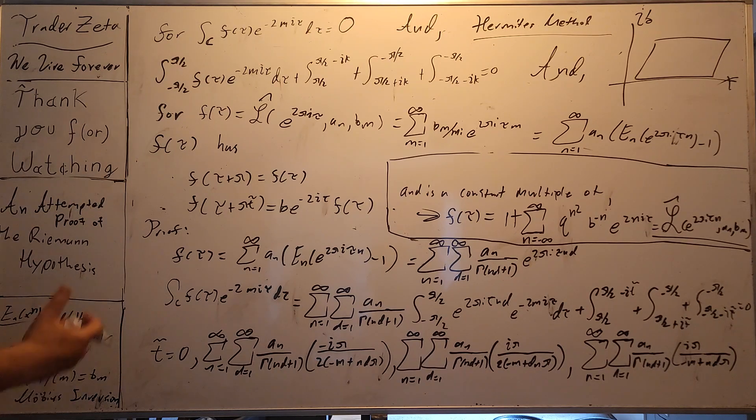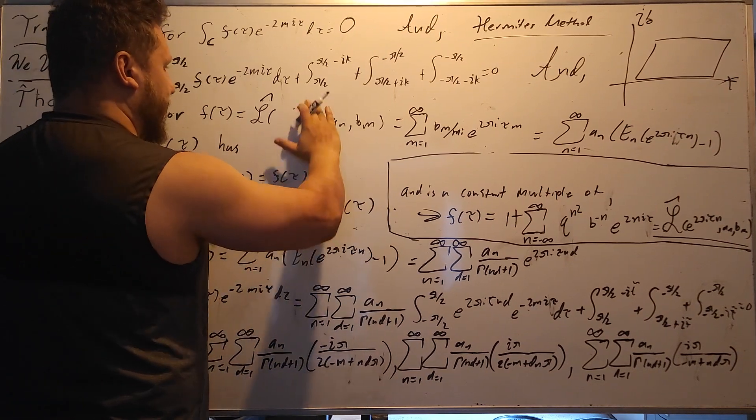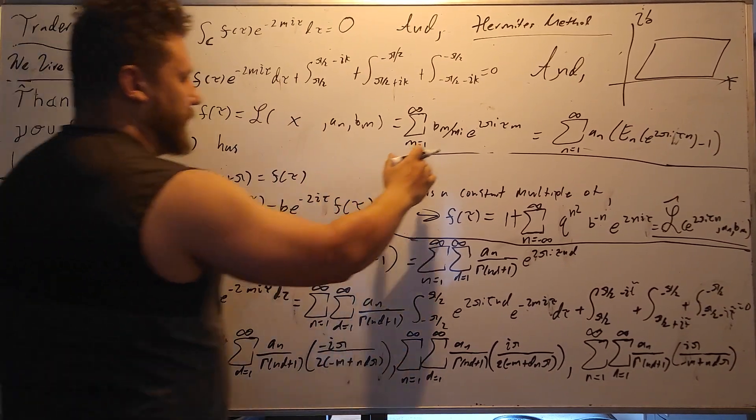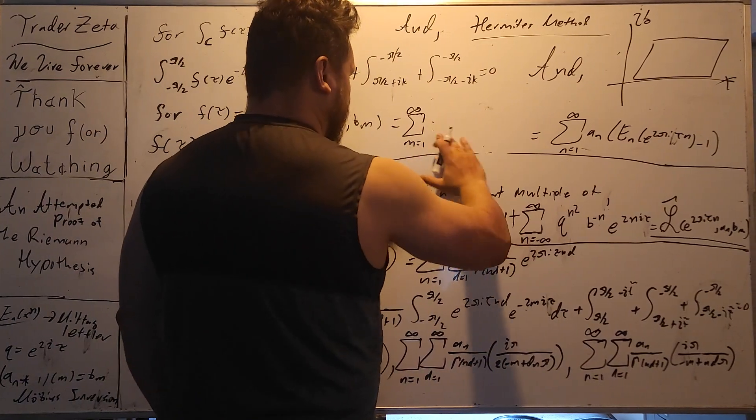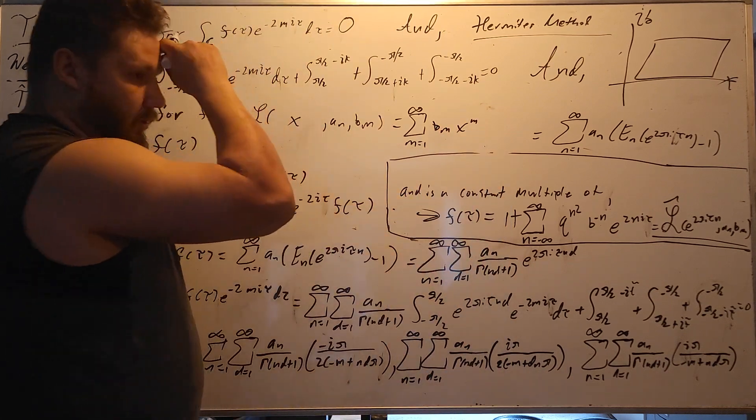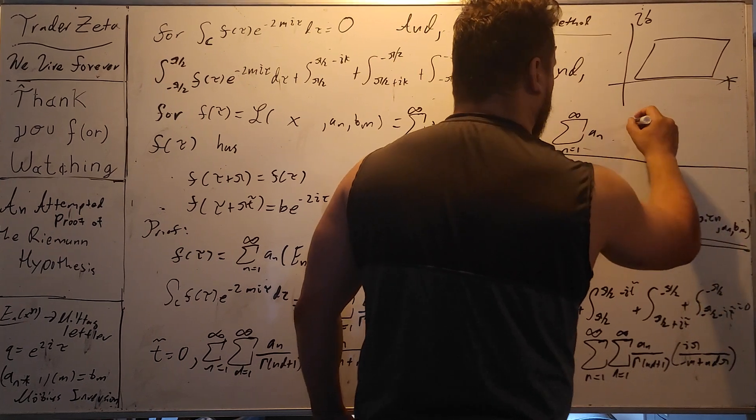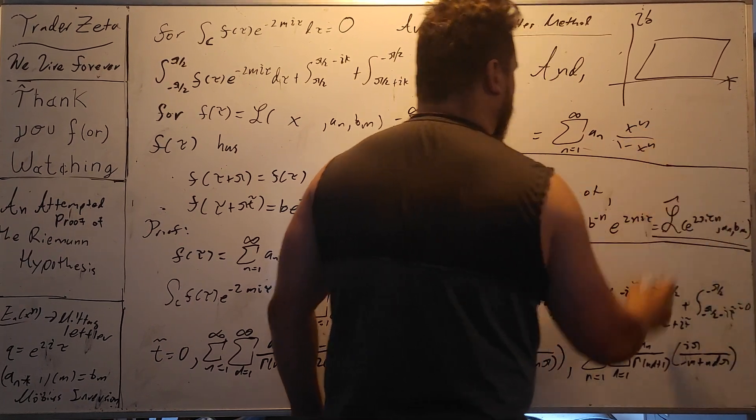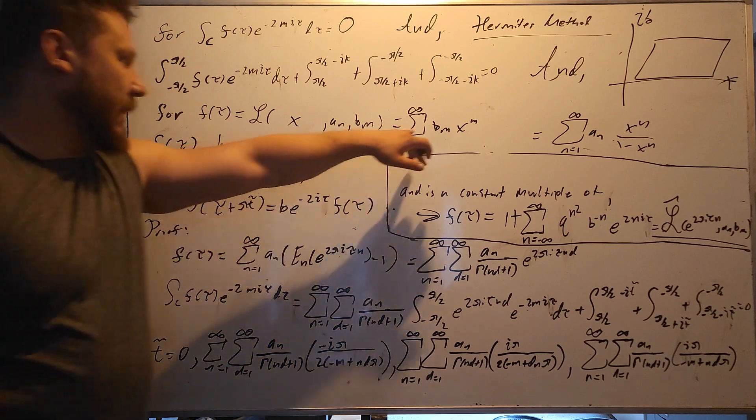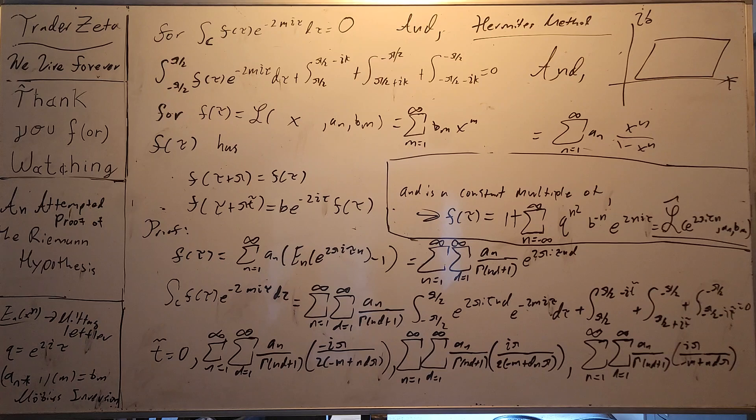In this series, I try to use the Exponential Lambert series to better understand the Riemann Hypothesis. So first, let me explain in some simplistic detail what the Exponential Lambert series is. The classical Lambert series is as such. Imagine you had some b sub m x to the m. This is what we call ordinary generating function. It also has this other representation, 1 minus x to the n. So b sub m is arithmetic function, a sub n is arithmetic function. And they are connected by the Möbius inversion formula.